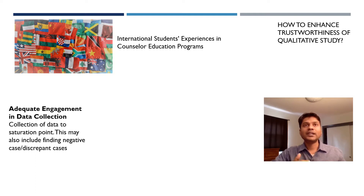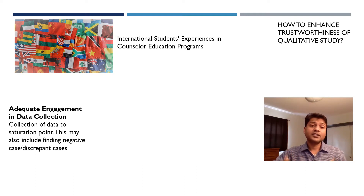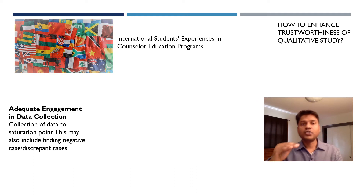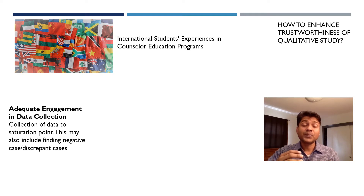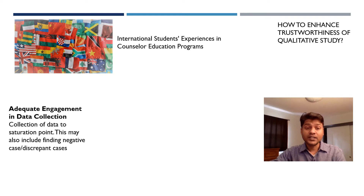For example, after interviewing and analyzing 10 participants, when I interview the 11th, 12th, 13th, and 14th participants, there is nothing new coming out of that data — they are sharing the same things we have already covered and analyzed. We call this the saturation point. The saturation point is where a researcher doesn't get anything new, and we stop collecting further data after reaching it. As a researcher, to ensure a high level of trustworthiness, we must make sure we reach this saturation point.